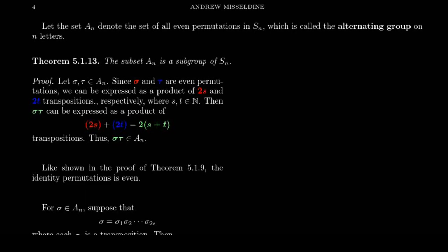In the previous video, we learned that there are two types of permutations in S_n. There are even permutations — those that can be factored as a product of an even number of transpositions (two-cycles) — and odd permutations, which can be factored as an odd number of transpositions.